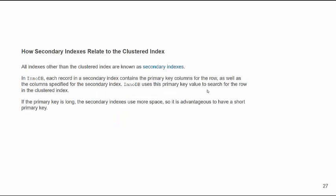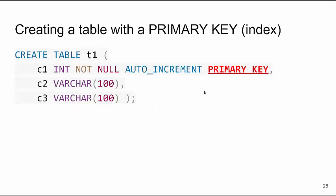Secondary indexes are on a separate index — they actually point to the primary index, so everything piggybacks on the primary index. Creating a table with a primary key is very simple: here we're creating a table called T1 with three columns, C1, C2, C3. C1 is integer, NOT NULL, AUTO_INCREMENT — which means every time you insert a record it will increment that value before writing it — and we tell the database server that this is our primary key.